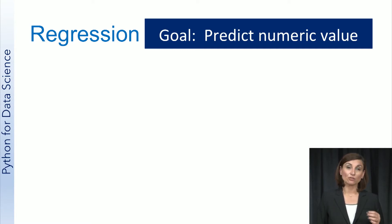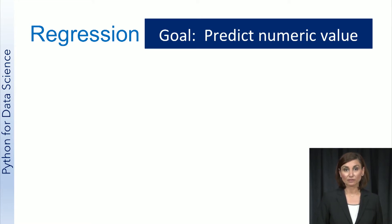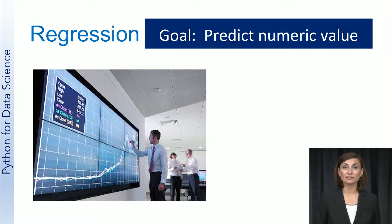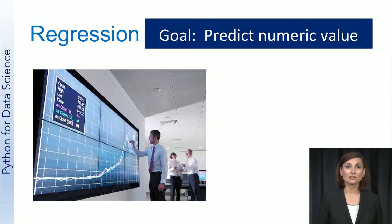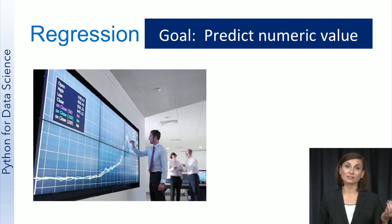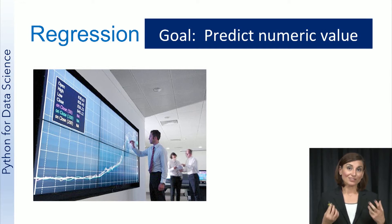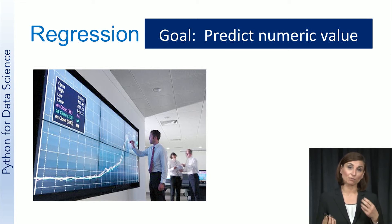When your model has to predict a numeric value instead of a category, then the task becomes a regression problem. An example of regression is to predict the price of a stock. The stock price is a numeric value, not a category, so this is a regression task. If you were to predict whether the stock price will rise or fall, then that would be a classification problem. But if you're predicting the actual price of the stock, then that's a regression problem. To summarize, in classification you're predicting a category, and in regression you're predicting a numeric value.